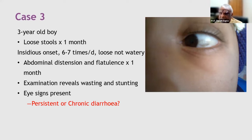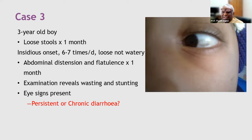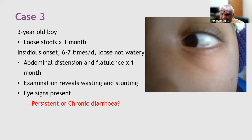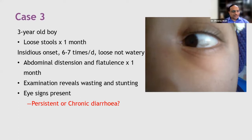The basic question is whether this is persistent diarrhea or chronic diarrhea. Participants suggest chronic diarrhea. The definition of persistent diarrhea is any diarrhea lasting more than two weeks. One participant correctly notes persistent diarrhea has an acute, infectious onset, whereas chronic diarrhea has a non-acute onset.